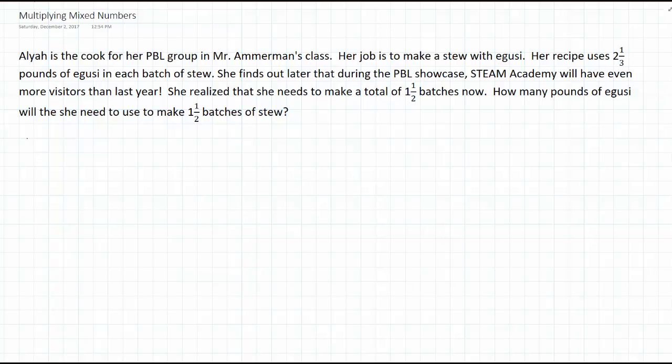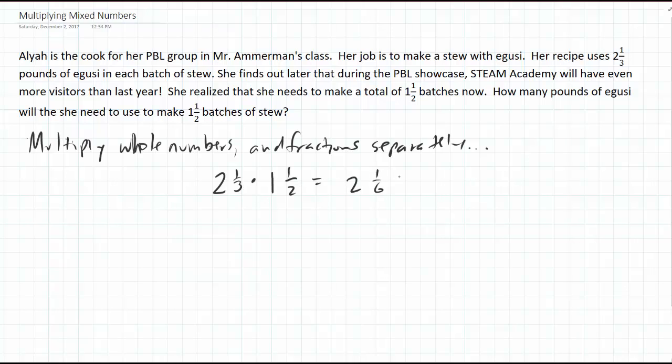Let's go over a common strategy that I see from many of us: multiply whole numbers and fractions separately. We have 2⅓ times 1½, and that's going to equal 2 times 1 is 2, and ⅓ times ½ is ⅙.